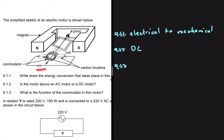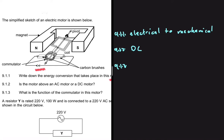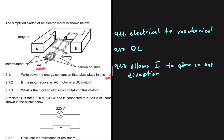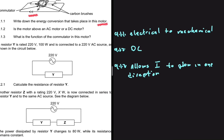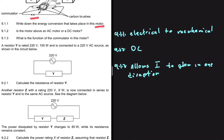Let's move to question 9.1.3: what is the function of the commutator in this motor? It allows the induced current to flow in one direction. There are more reasons you can possibly give, but let's stick with that for now. Let's look at the next question, 9.2: a resistor Y is rated 220 volts, 100 watts, and is connected to a 220-volt AC source as shown in the circuit below.